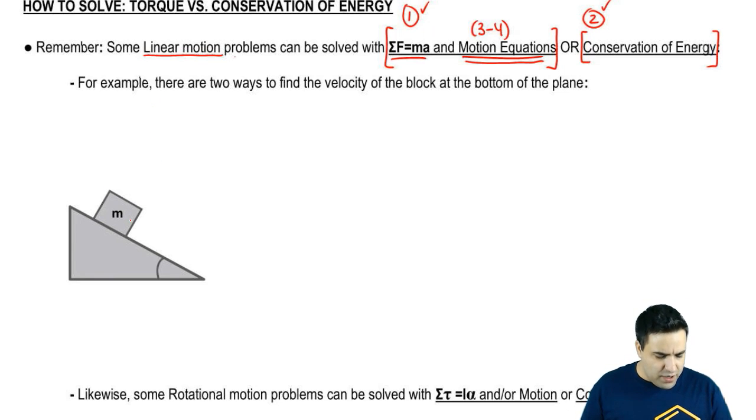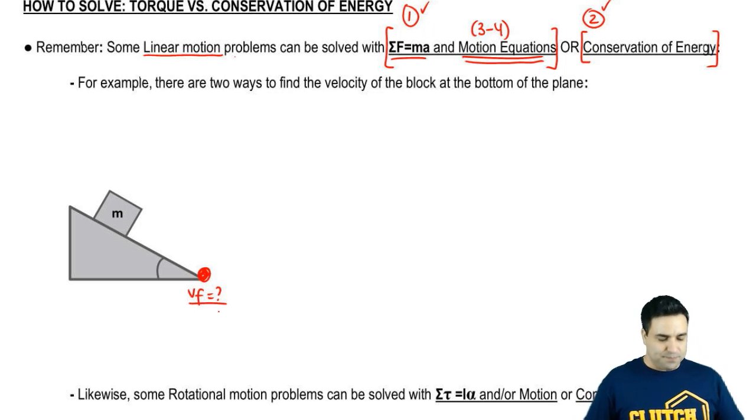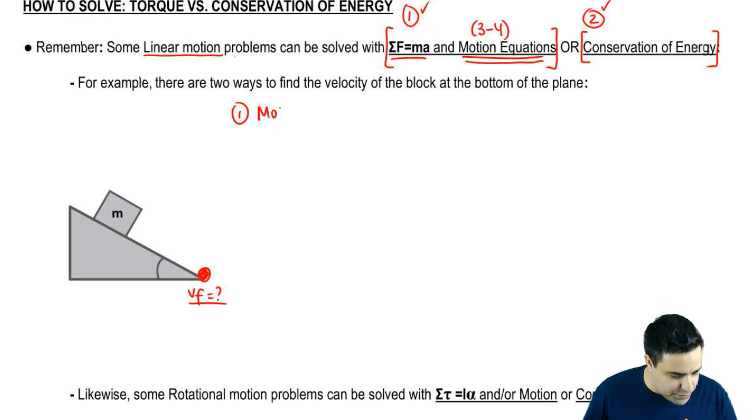So if you have a block here and the block slides on an incline, and let's assume that's frictionless, there are two ways you can find the velocity at the bottom. So if you want to find v final at the bottom here, there's two ways. The first way, I'm going to use the first way here to be F=ma and equations, motion equations. So the first way would be with motion.